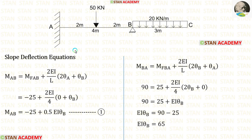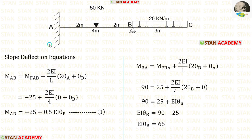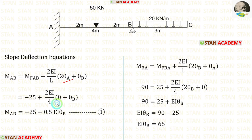Now let us set up the slope deflection equations. There is no need to make slope deflection equations for span BC because it is overhanging; only make them for span AB. In the equations, let us apply the fixed end moments. The length of AB is 4 meters. At point A, there is a fixed support, so there will be no slope, meaning theta A will be 0.